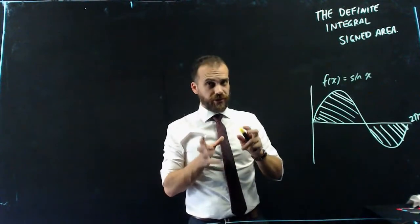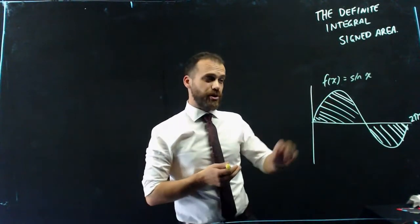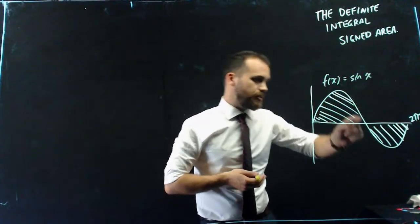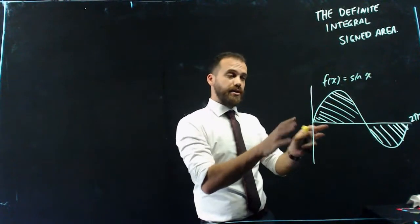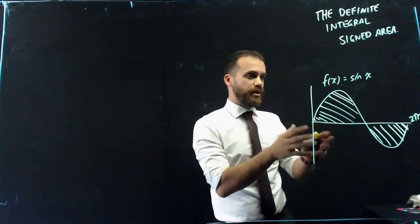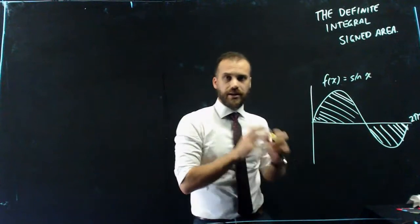This is a function you should be familiar with, f of x equals sin x, starts at zero, moves up, down, and gets to 2 pi, and then repeats again. Now this shaded area is the stuff I want to find. I want to find the area here and here.